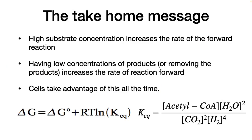The take-home message is this: high substrate concentrations increase the rate of the forward reaction. Having low concentrations of products, or removing the products, increases the rate of the reaction forward. Cells take advantage of this all the time. They will take away products or increase the local concentration of substrates to drive a desired reaction.